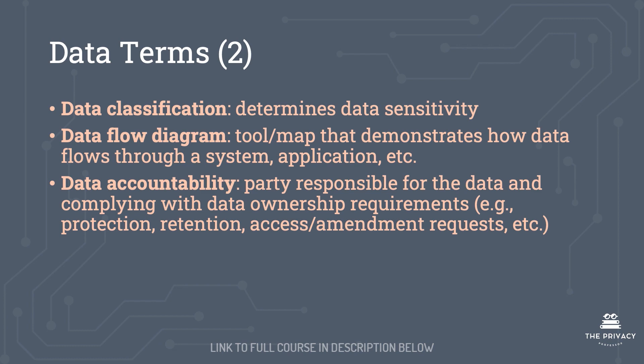A data flow diagram is a tool that maps out how data flows through a system, application, or organization. Data accountability is a party responsible for the data and complying with data ownership requirements. For example, this individual is accountable for the protection, retention, and granting access and amendment requests.